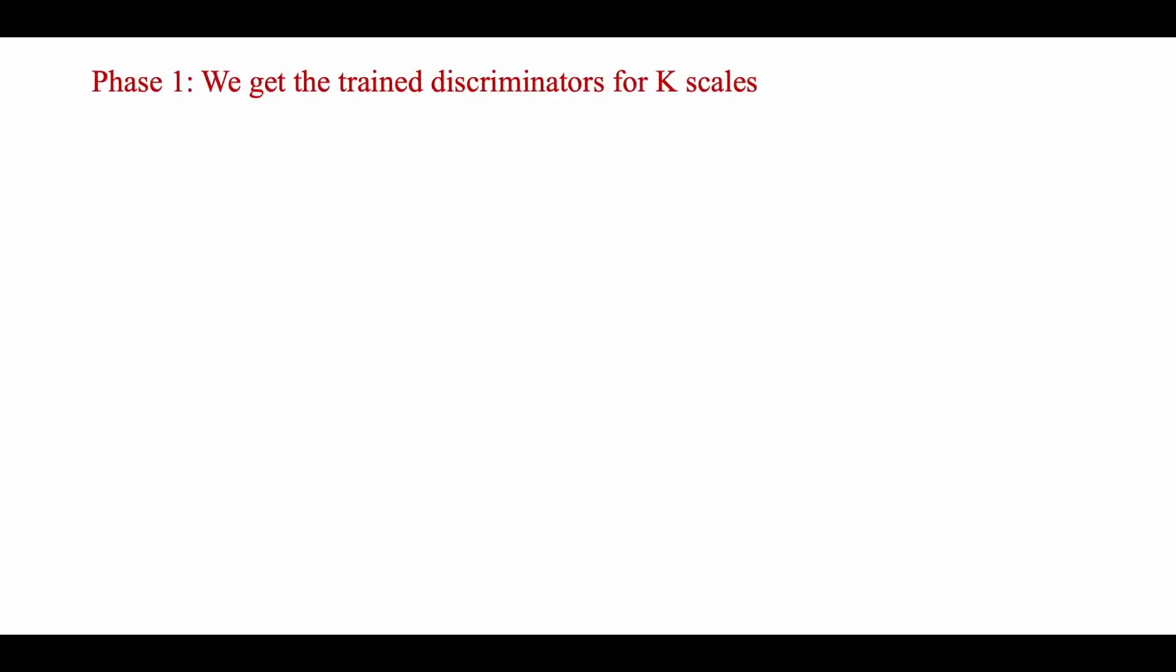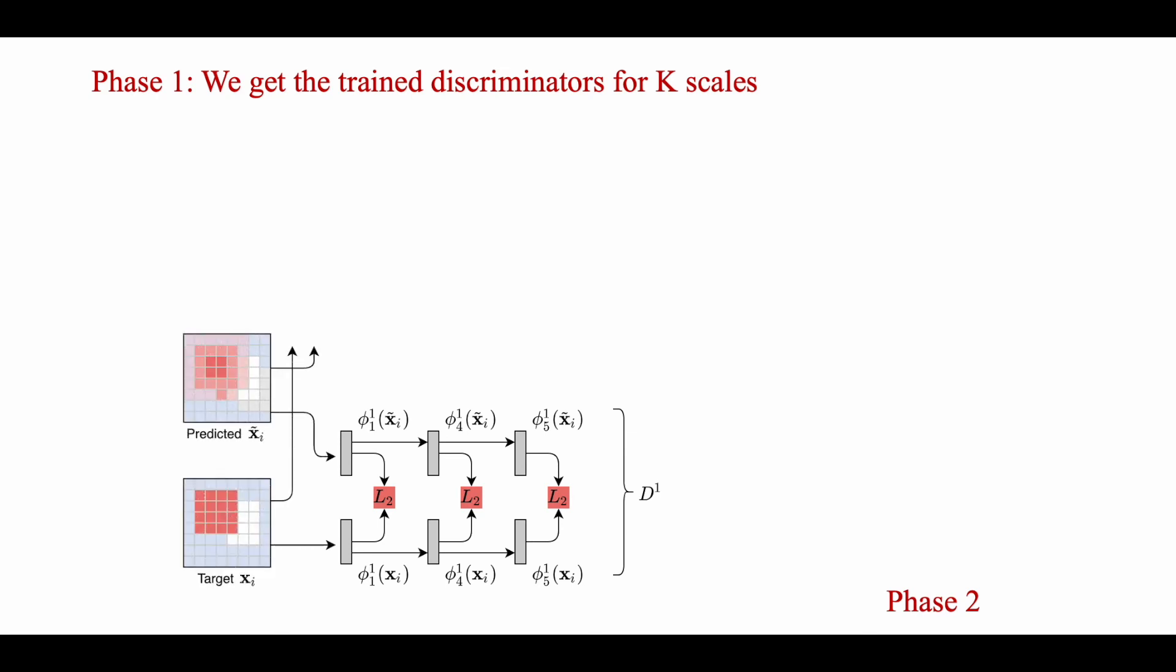At the end of phase one, we have k trained discriminators. The coarsest scale discriminator D1 acts as a feature extractor between predicted and target images. Feature maps are taken from all intermediate layers of the discriminator. This is done for all trained discriminators up to the k-th scale.